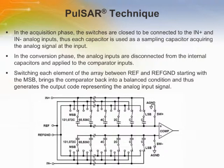The second phase is the conversion phase, where SW plus and SW minus are open. The inputs are disconnected from the internal capacitors and applied to the comparator inputs, resulting in an unstable comparator. Without detailing the SAR algorithm, switching each element of the array between REF and REF ground starting with the most significant bit brings the comparator back into a balanced condition, thus generating the output code representing the analog input value.